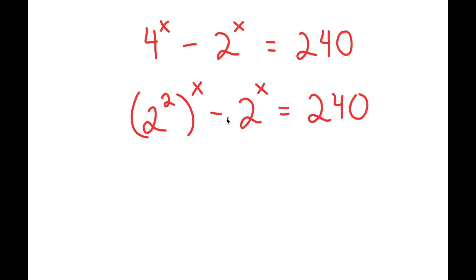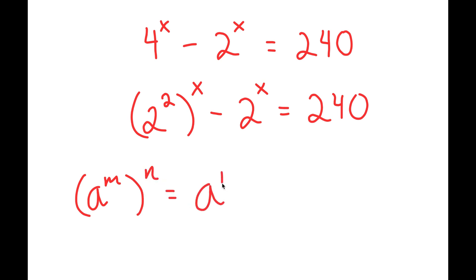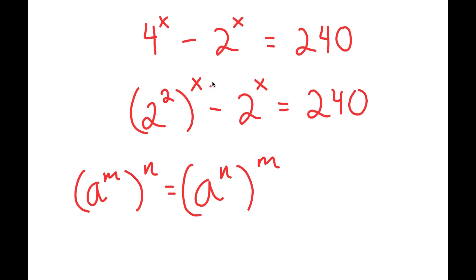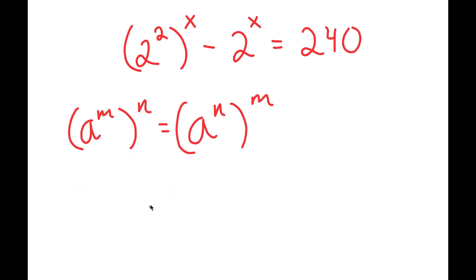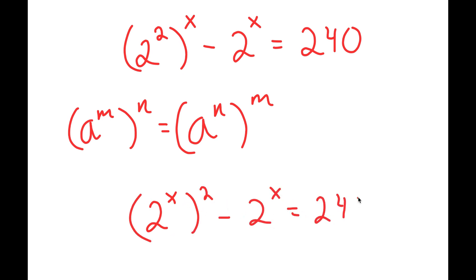Now, if I have something in the form a to the power of m to the power of n, this is equal to a to the power of m times n. So 2 to the power of 2 to the power of x is going to equal 2 to the power of 2x. And I have this minus 2 to the power of x is equal to 240.